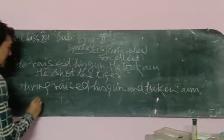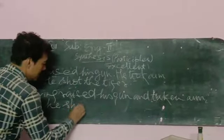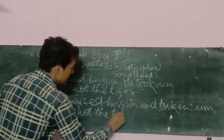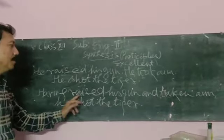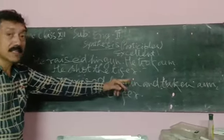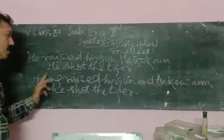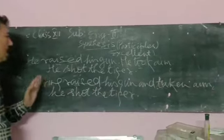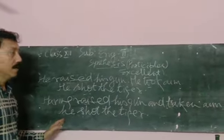Comma, he sought the tiger. So having raised his gun and taken aim, he sought the tiger.